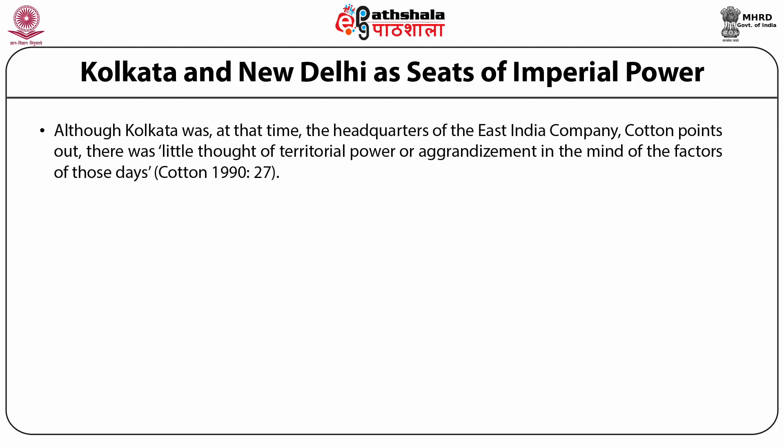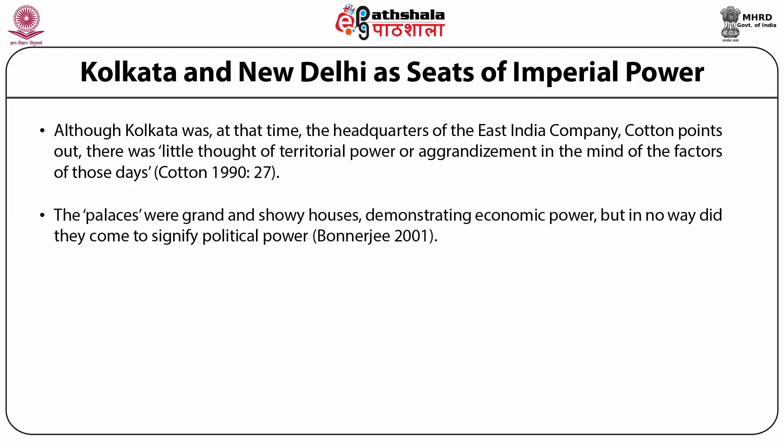Although Kolkata was the headquarters of the East India Company, Cotton in 1904 points out there was little thought of territorial power in the minds of the factors of those days. The prosperity of the traders led them to build beautiful houses along the river banks, which earned the city the grand title of 'city of palaces.' But this title did not have any imperial connotation. The palaces were grand and showy houses demonstrating economic power, but in no way did they signify political power, as Jaini Banerjee has argued. So various communities, and not just the British, benefited from economic growth and embarked on an orgy of speculation in private houses.